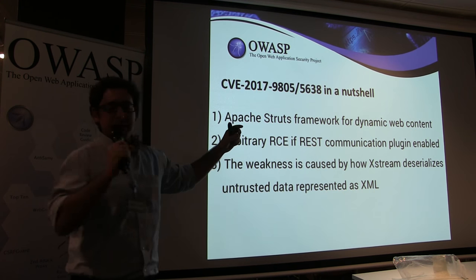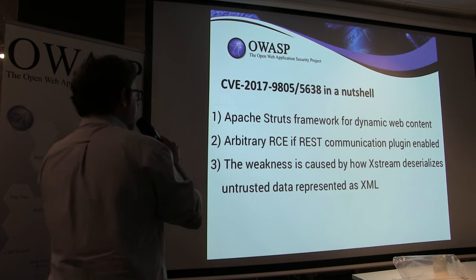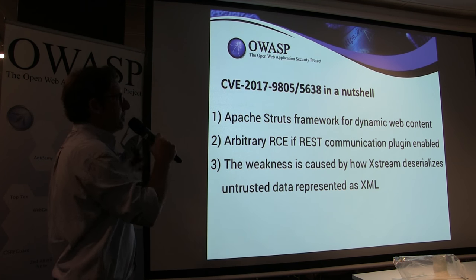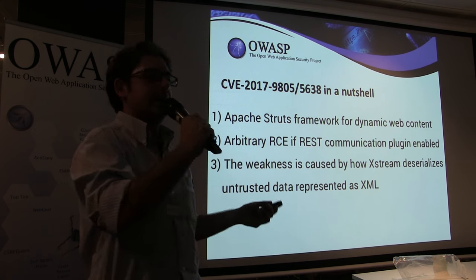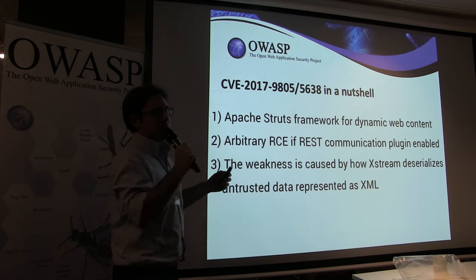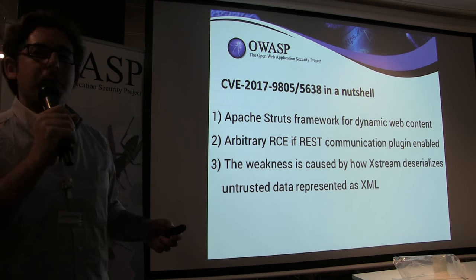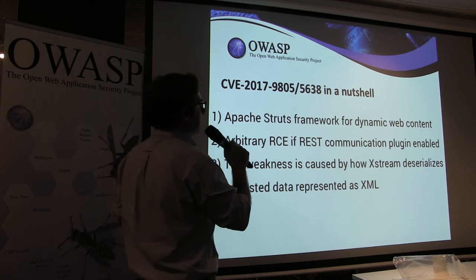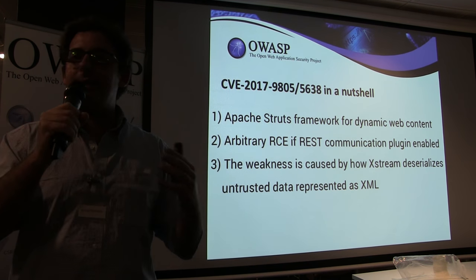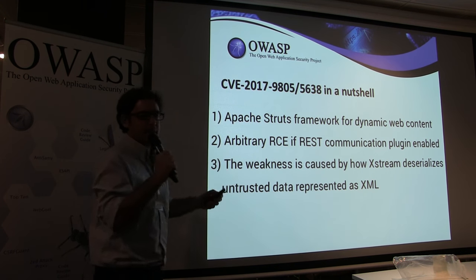Let's look at the vulnerability actually exploited in Equifax. There's still a lot of talk in the community about the exact vulnerability, but what is important is that it was an Apache Struts vulnerability. It allowed remote code execution using a plugin — specifically the XStream plugin — and the essential flaw was in how it deserializes untrusted data, in this case XML.